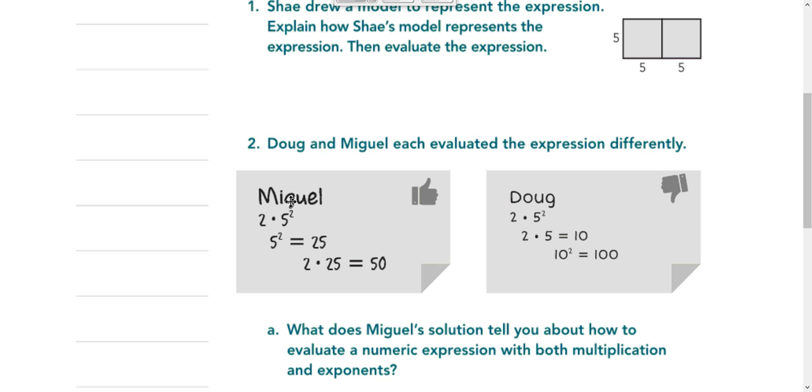Let's look at this situation. We've got two of the same expressions, Miguel and Doug, solve them in different ways. You can see that they have different answers. Miguel is right, Doug is wrong.